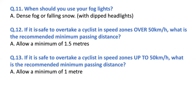Question thirteen: if it is safe to overtake a cyclist in speed zones up to 50 km/h, what is the recommended minimum passing distance? Answer: allow a minimum of 1 meter. So, over 50 km/h requires 1.5 meters; up to 50 km/h requires 1 meter.